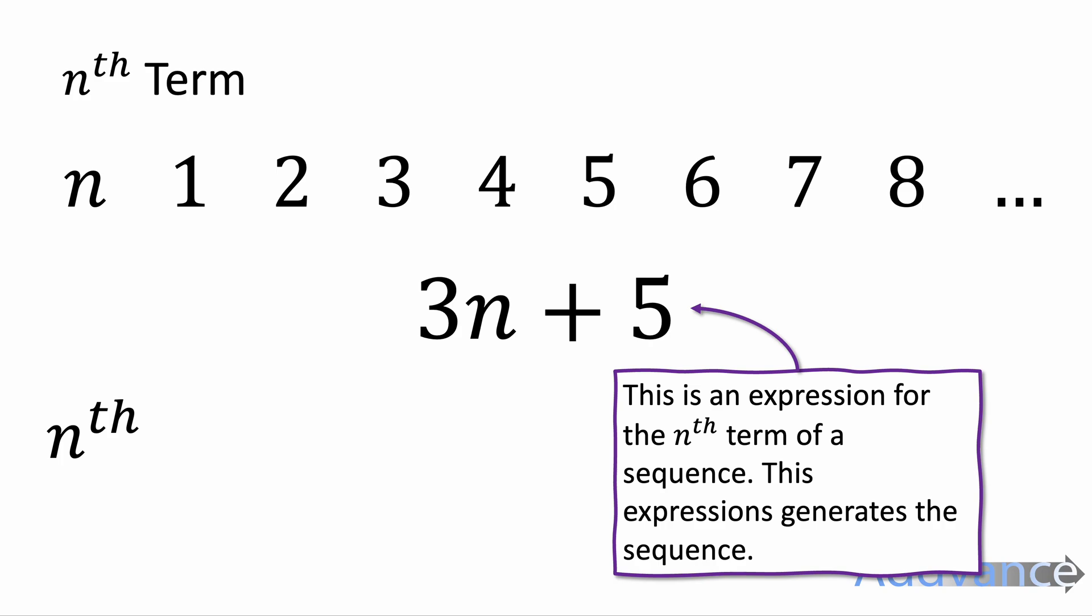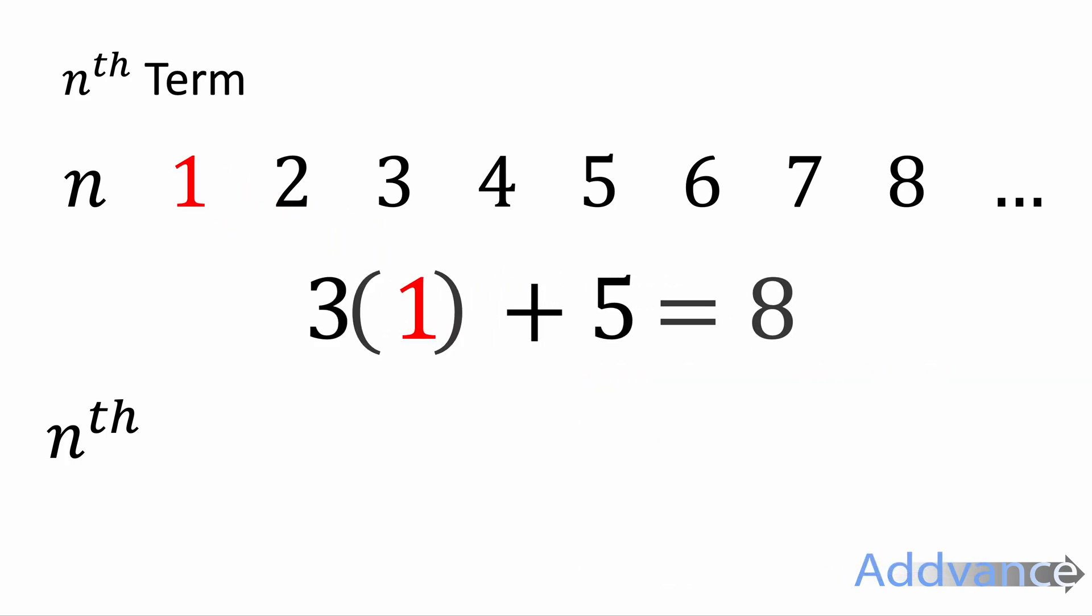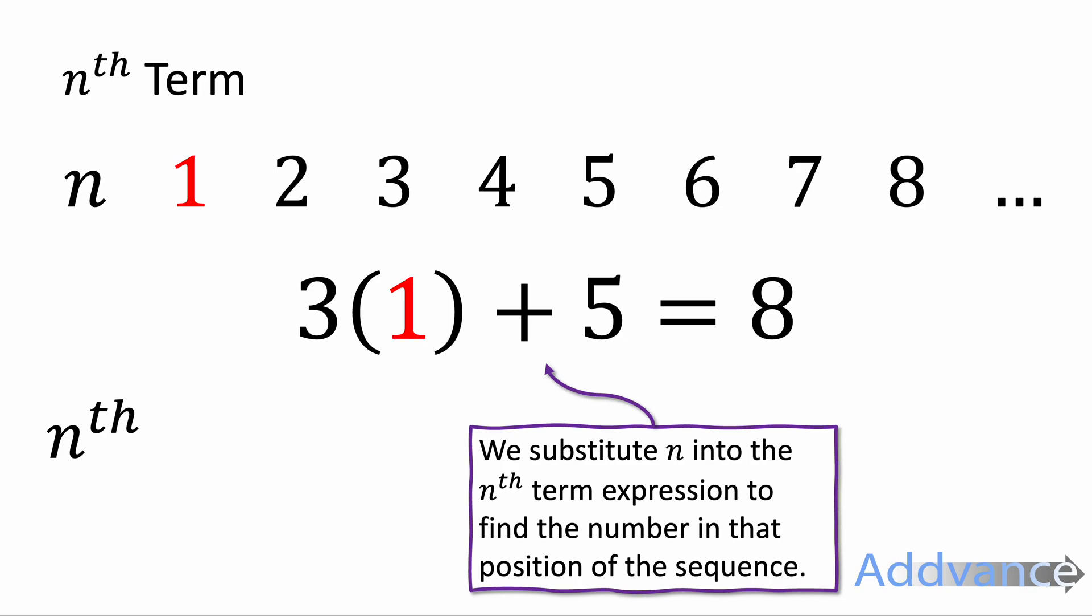We've got the expression 3n plus 5, and this is going to help us generate the sequence from the n's. Let's see how this works. If n is one, three times one plus five gives us eight. So we substituted the n into the expression to find the nth term of the sequence. The first term of the sequence is eight.